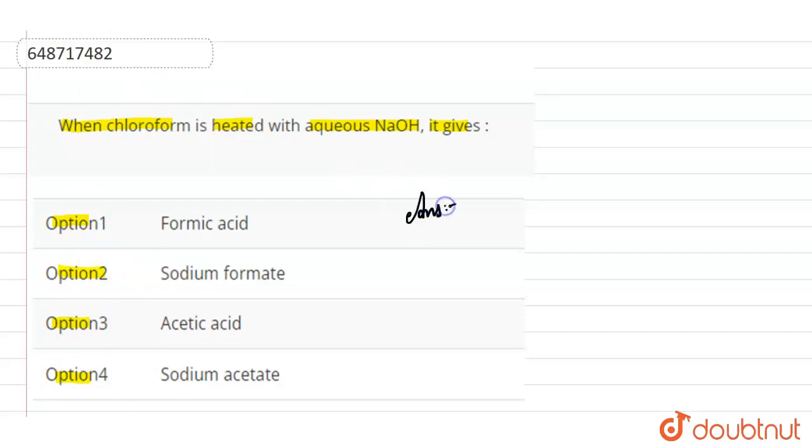Heating chloroform with aqueous sodium hydroxide solution forms sodium formate. Let's see the reaction for it. We have CHCl3, this is chloroform.